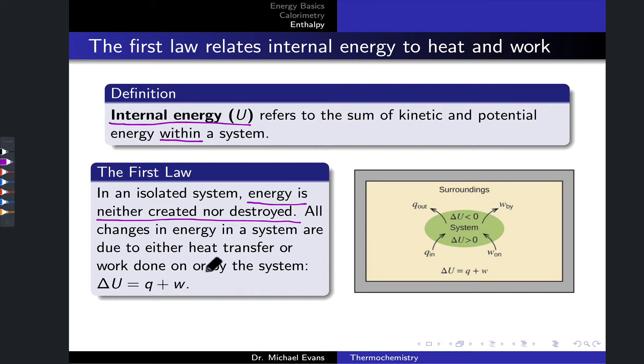What this means for a change happening within a system is that the change in internal energy must be due to one of two types of energy transfer: either heat transfer, which we represent as Q, or work, which we represent as W. Heat transfer results from a change of the random motions of particles within the system, and work results from a change in the coordinated motions of particles within the system, so non-random, essentially.